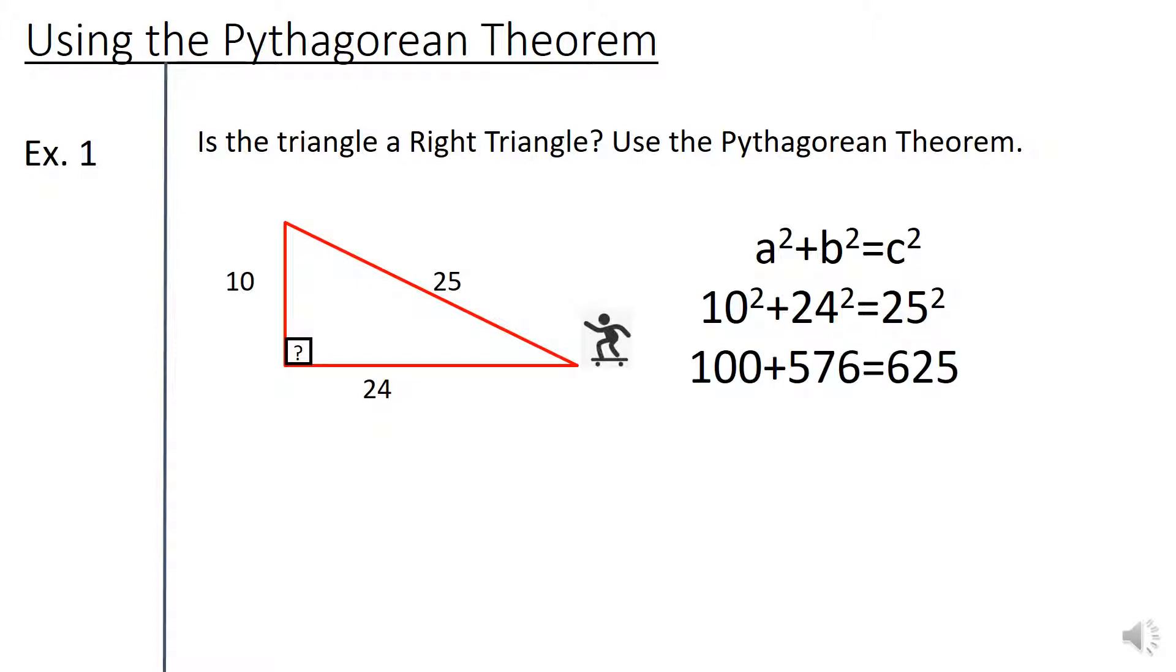So now we've squared all three of these numbers and I know that's its own difficult thing. At this point I may or may not have made a video on how to do that that you could click on. But basically we're taking the number and multiplying it by itself. 10 times 10 is 100, 24 squared is 576, and 25 times 25 is 625. So now we add the numbers on the left to get 676 equals 625.